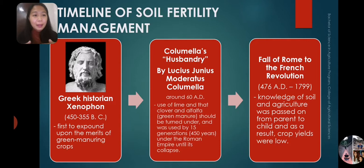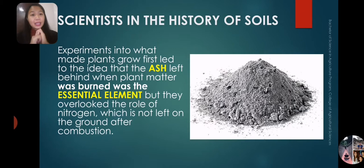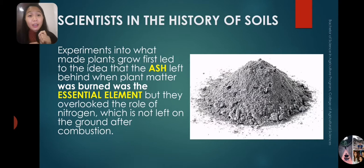Let us look at the different scientists involved during that period and their contributions to the discovery and enhancement of soil fertility. Early experiments into what made plants grow first led to the idea that the ash left behind when plant matter was burned was the essential element. But they overlooked the role of nitrogen, which is not left on the ground after combustion.